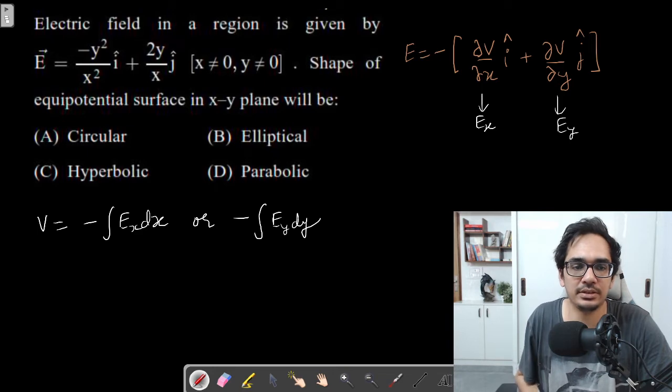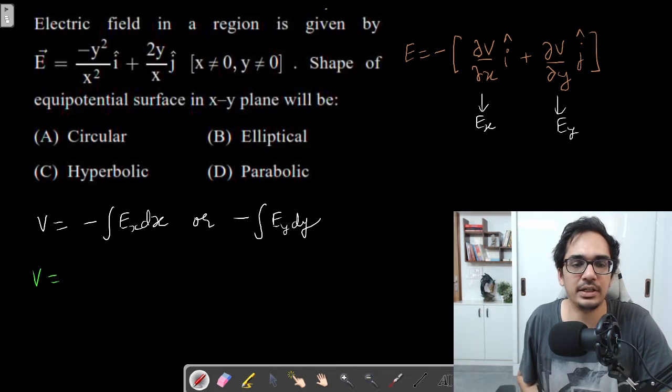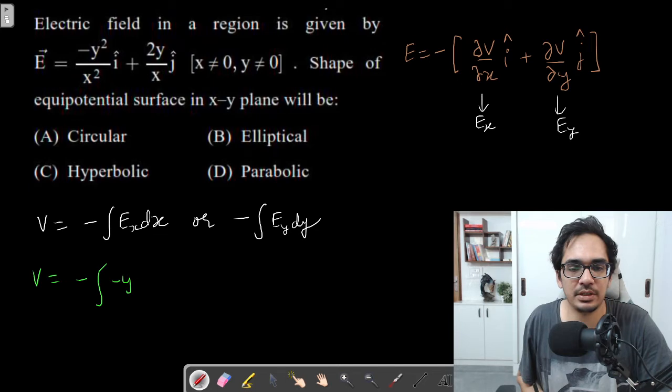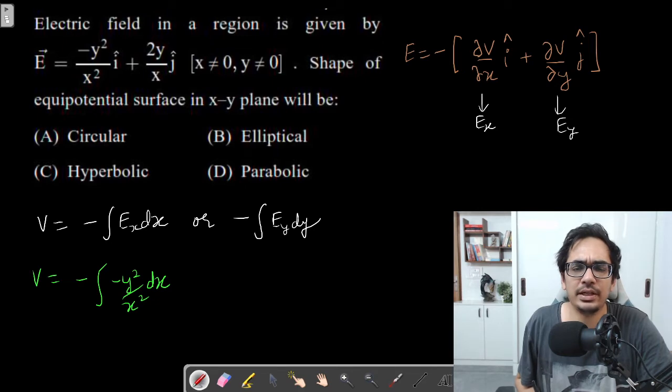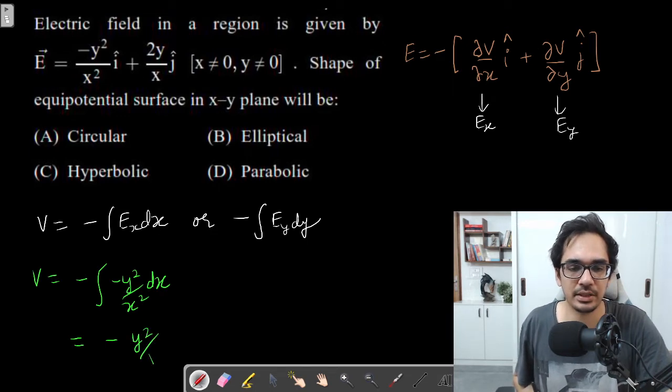For example, if I want to find the potential V equals minus integral Ex dx, so minus y squared by x squared dx. Here we will assume y to be constant. This is x to the power minus 2. Integration will be x to the power minus 1 by minus 1. So this will be minus y squared by x.